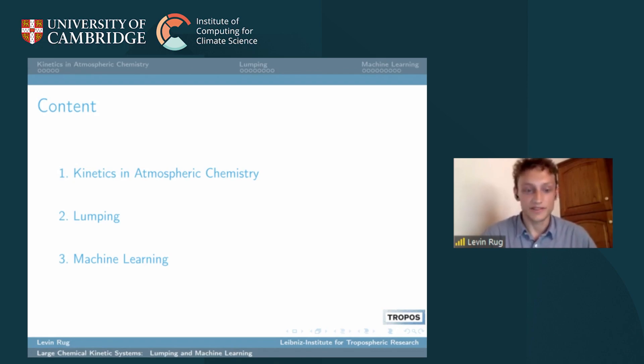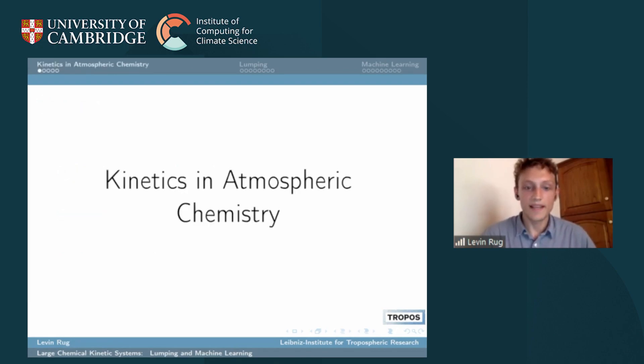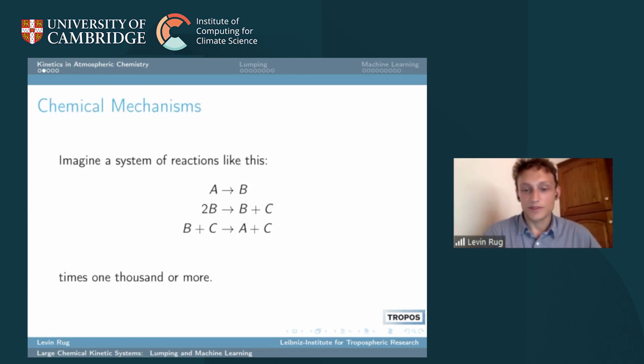Atmospheric chemistry is important for air quality but also for weather and climate in general. It consists of very simple chemical reactions but very many of them, like 1,000 or 6,000 or even up to 14,000 such reactions, and we want to know the concentrations of chemical compounds in the atmosphere in the future.